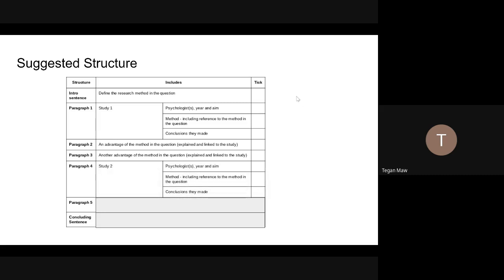Paragraph four is quite like number one, but it's with your second study or second theory. So if it's a study, you're going to do the psychologist, the year and the aim, the method referring back to the research method in the question and any conclusions they made. If it's a theory, again, just three key ideas from that theory.